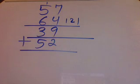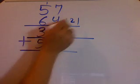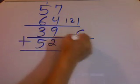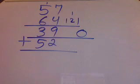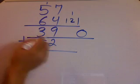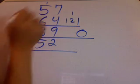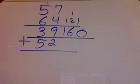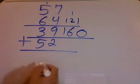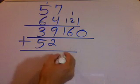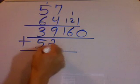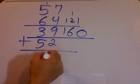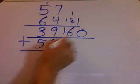Then I have the 9 and 1, which gives me 10. I put the 1 there, and 3 plus 2 gives me 5, plus 1 is 6. So that's 160.